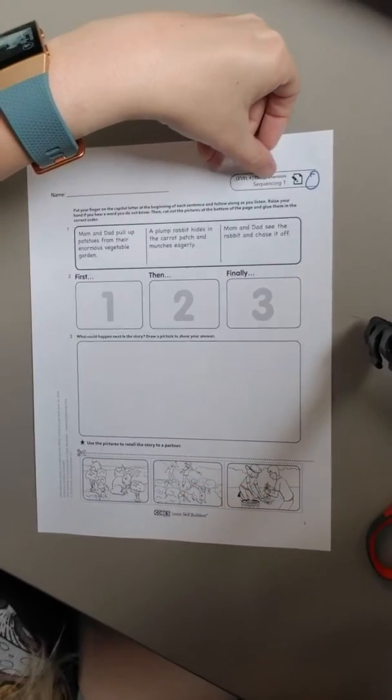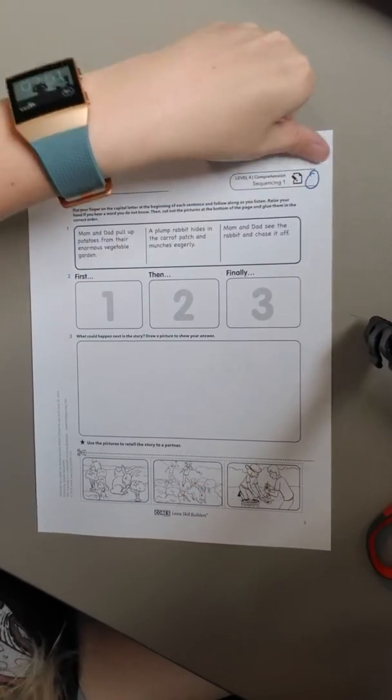Scholars, this is level four, comprehension, sequencing one, sheet O. Make sure you're on the right page.